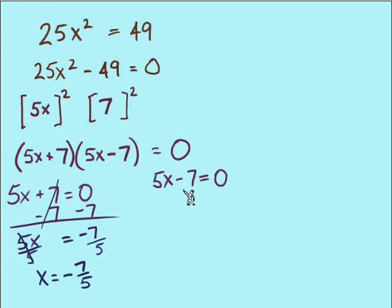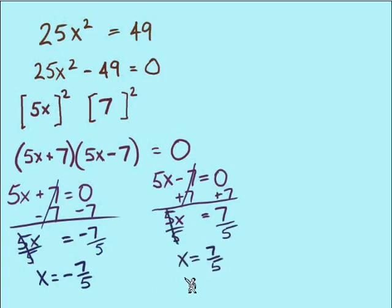We have another part here to work with. 5x minus 7 equals 0. Solving this, we will add 7 to both sides. And then divide by 5 both sides. Our other solution, x equals positive 7 fifths. There is our solution set.